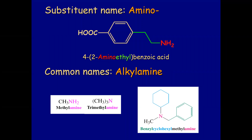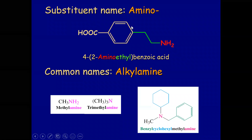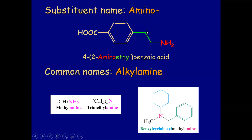As a substituent, the amine is called the amino group. So if you have a higher priority group, it will be named as the amino group. For example, if we remove the amino group chain it is benzoic acid. On position number four there is a substituent which is an amino group, and the amino is on position number two. Remember, we always start counting from carbon number one.